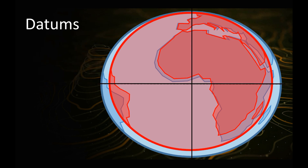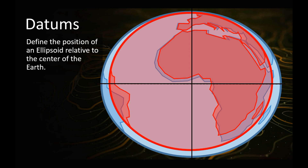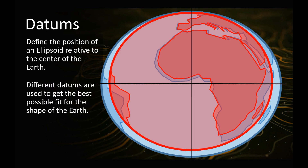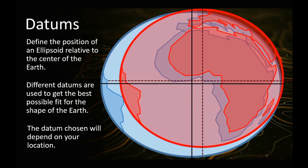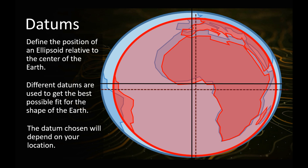So what you have is something called a datum. What the datum does is it basically defines a position of the mathematical equation, or the ellipsoid, relative to the center of the Earth. Different datums are used to get the best possible fit for the shape of the Earth in different areas of the globe, depending on where you are. So the datum chosen will depend on your location. For South Africa, we need to choose a different datum to try and get a best fit, and the datum we use in South Africa is called Hartebeesthoek 94. So the datum basically shifts the position of an ellipsoid relative to the center of the Earth, and with our datum shifted to Hartebeesthoek 94, you can see we get a better fit for Southern Africa. But you wouldn't use our datum for Spain, for instance, because there are going to be some issues with that datum.